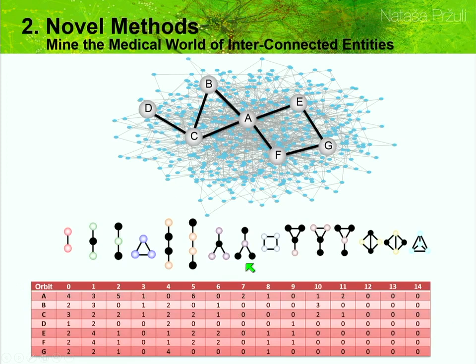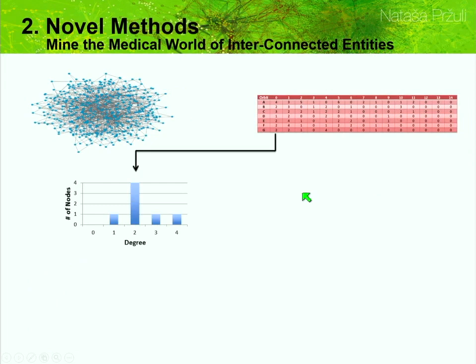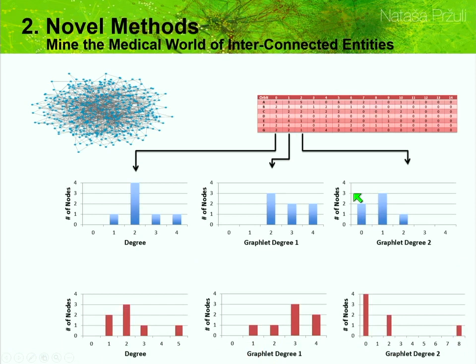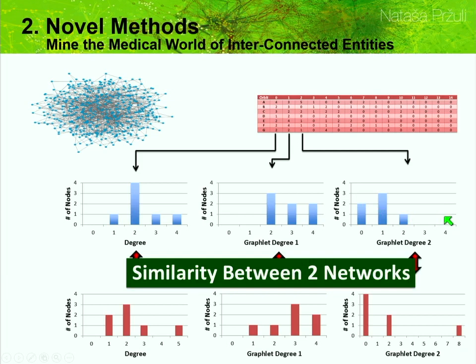For each node we have this vector of numbers counting how many little structures it has around it. Then we go along the columns — this is your degree distribution, and then we have distributions for graphlets of degree one, two, and so forth. Now you have many distributions describing the structure of your network. When presented with another network, you compute their distributions and compare them to see how similar two networks are. We wanted many of these numbers to more tightly constrain the ways networks can vary and be more sure that they are structurally similar.